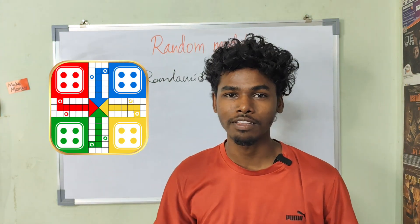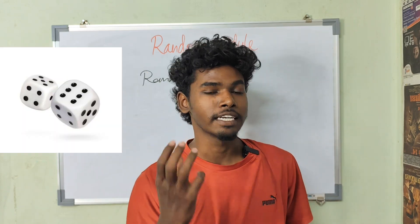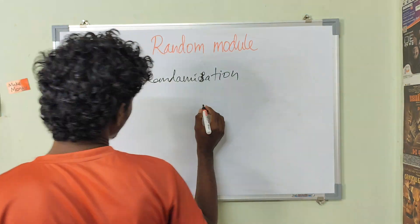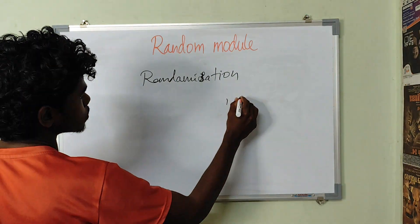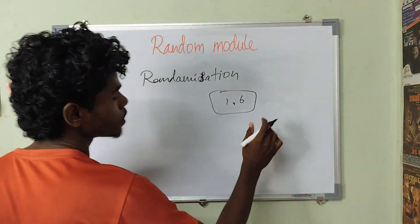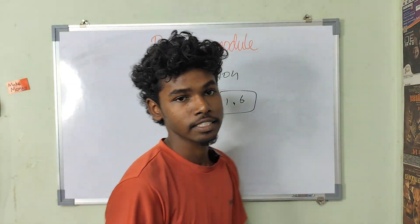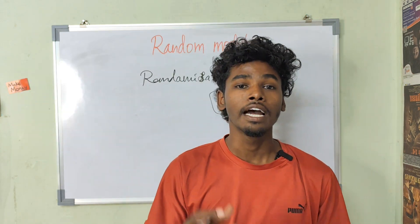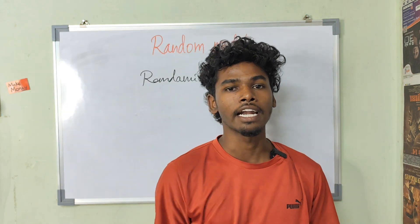There is a Dice game. The dice is here and there is a random number — one, two, three, four, five, six. And there is no fixed one. That is randomization.